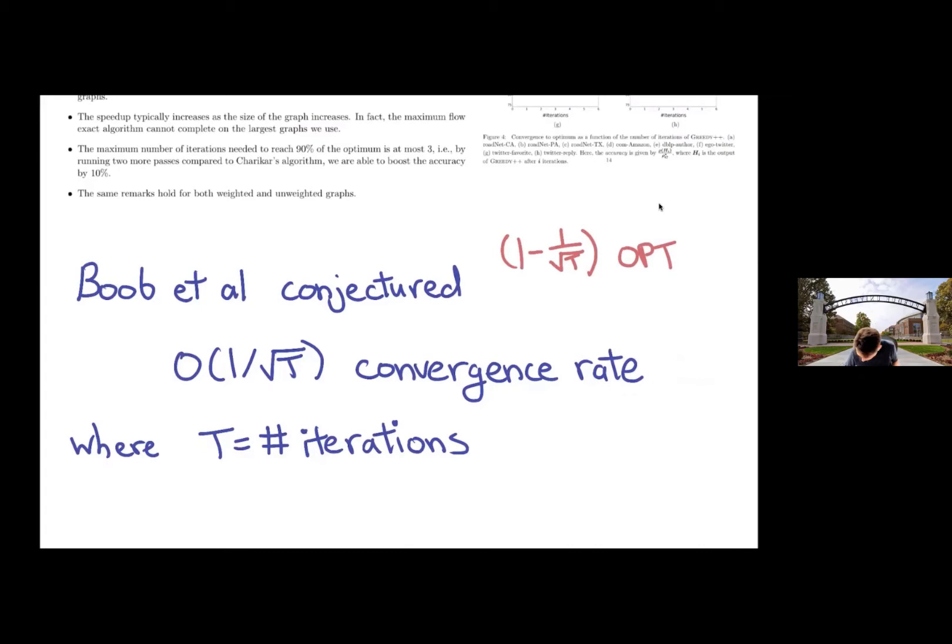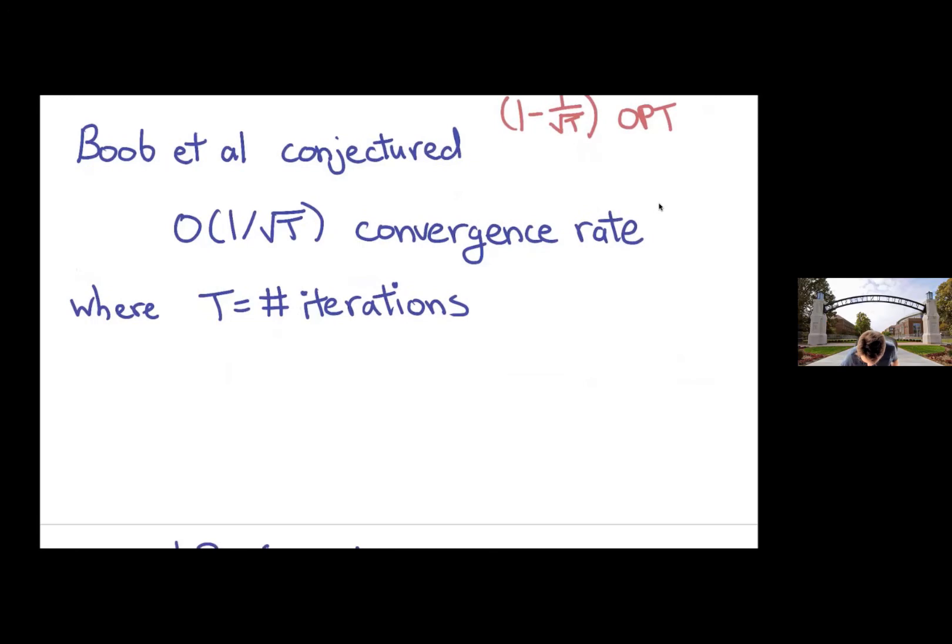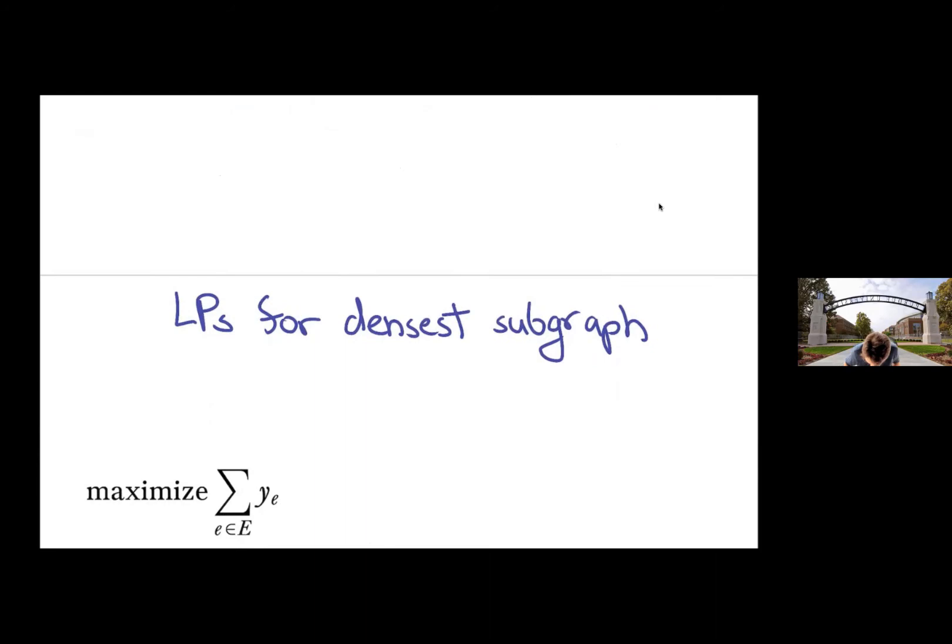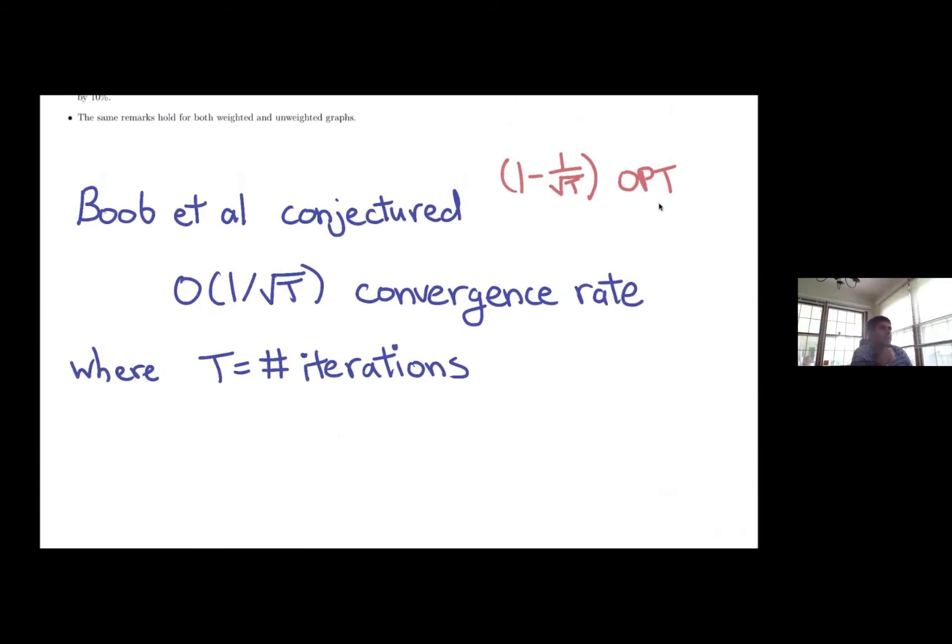And to kind of motivate their approach and get into the weeds a little, it helps to look at some LPs. The algorithm again is to peel the one with the least degree and then add something to the load. So the load is keeping track of the degrees of these vertices as they add up.